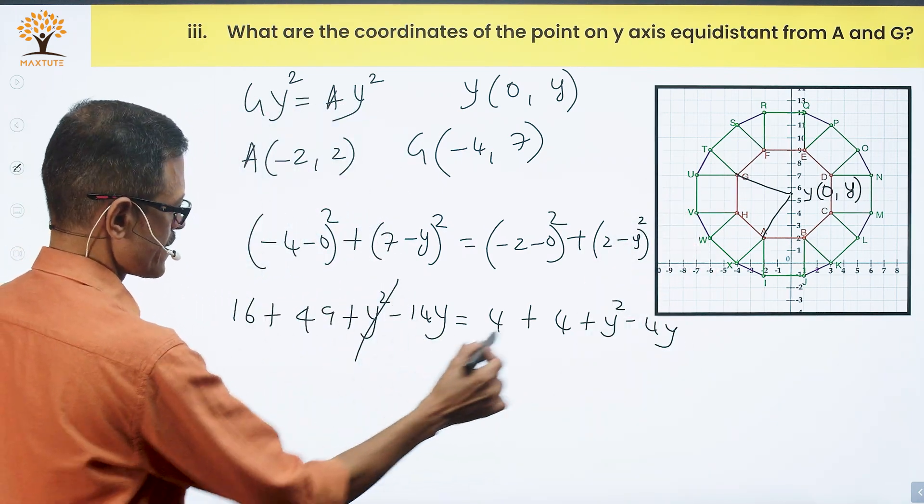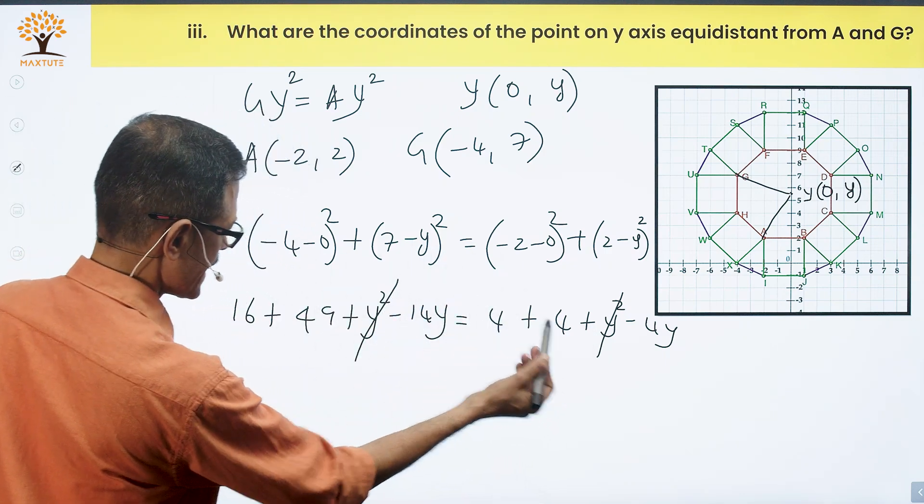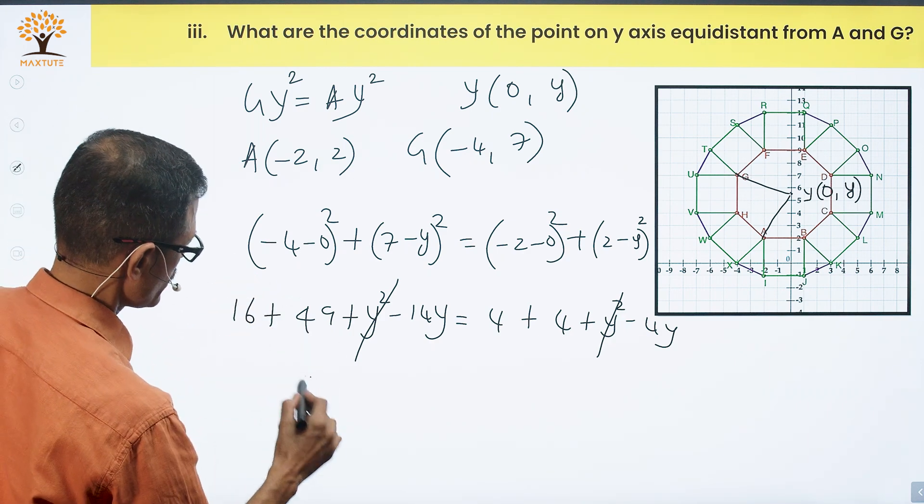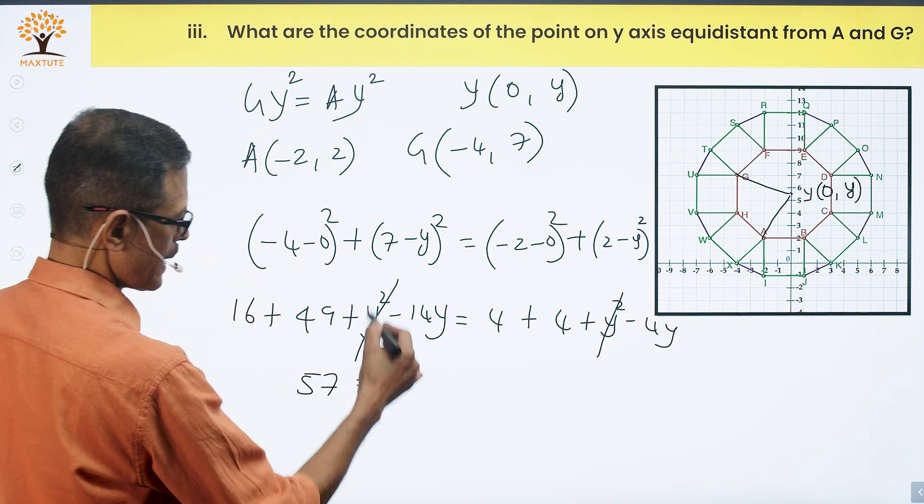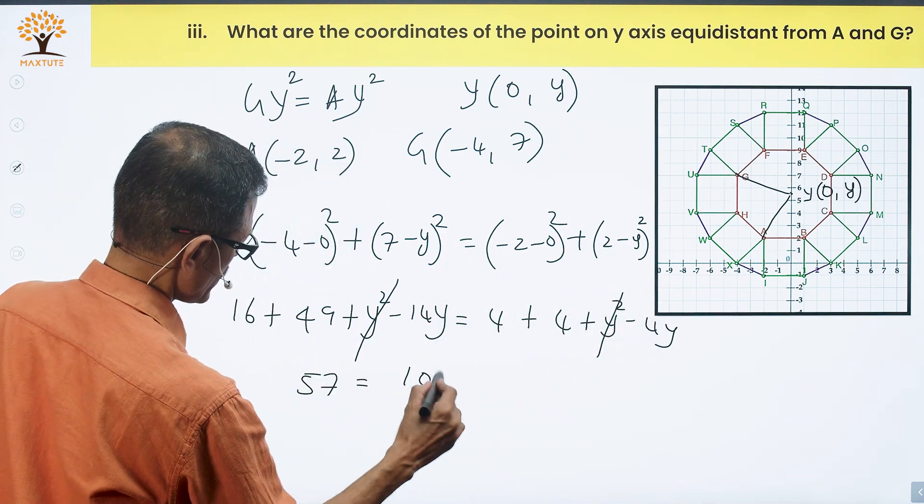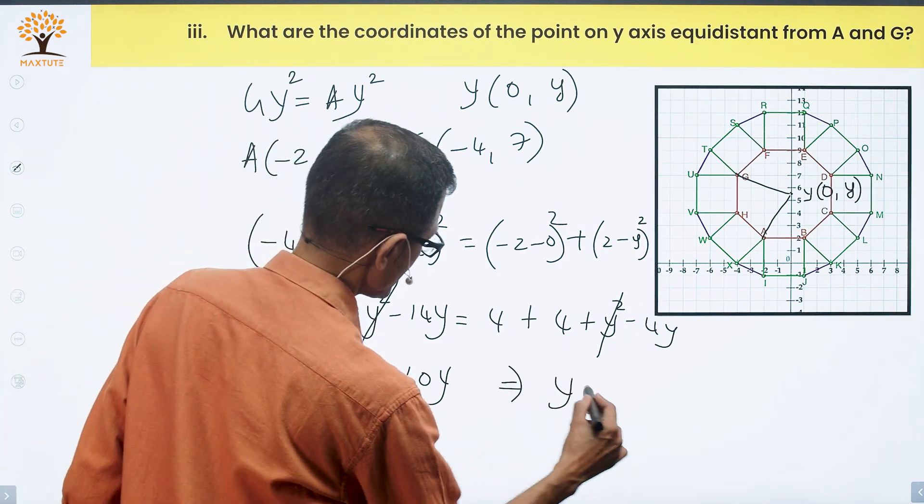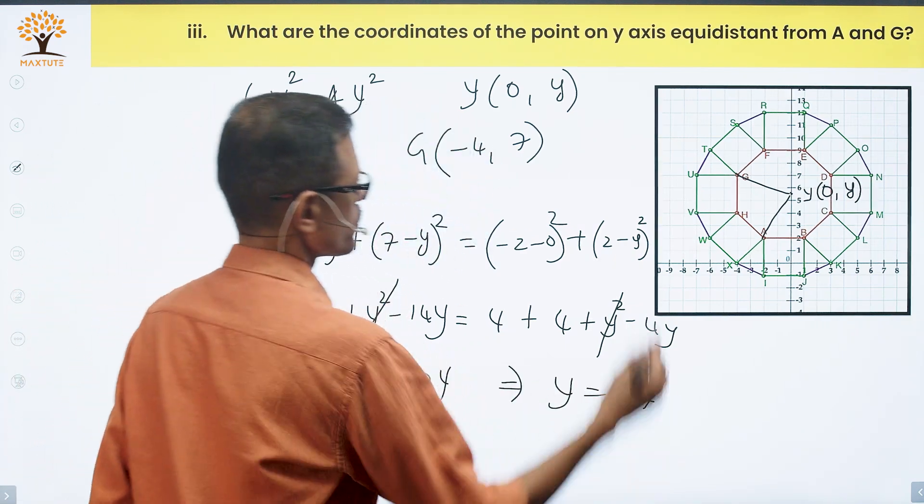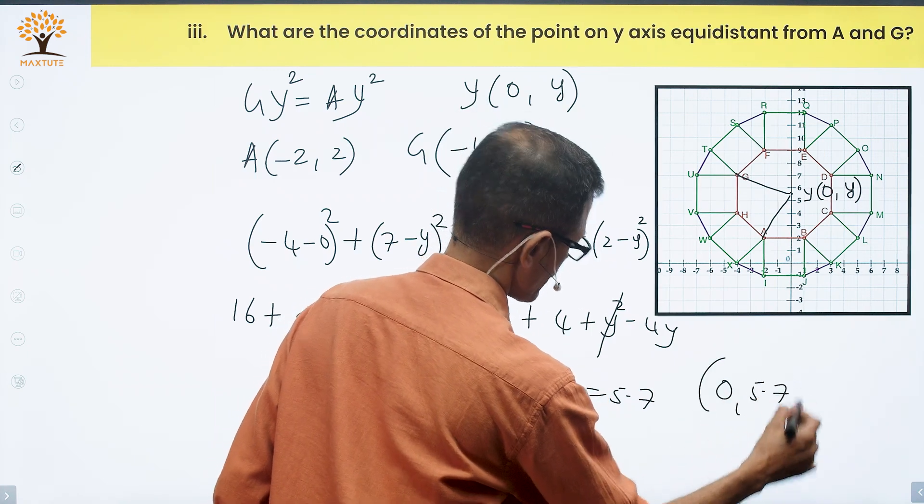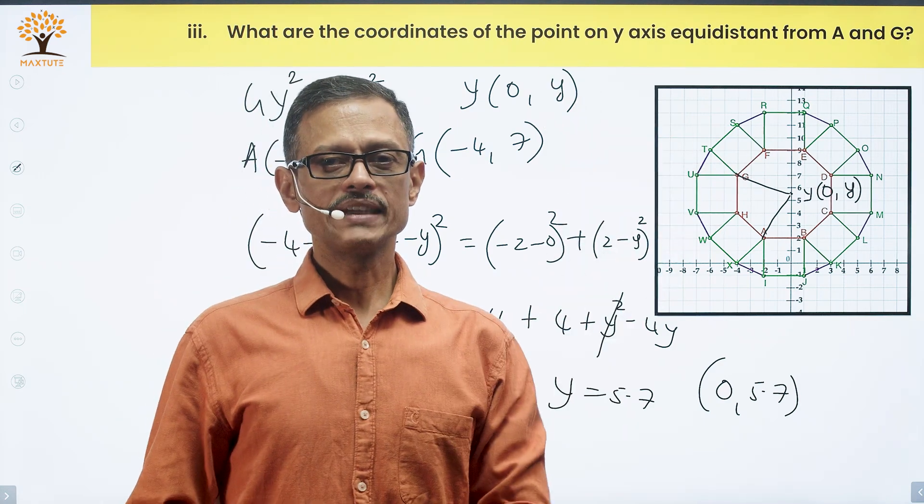Y square on both sides get cancelled. We have 8 here. 16 minus 8 is 8, 8 plus 49 equals 57. Minus 14Y goes to the right side, plus 14Y minus 4Y equals 10Y. 10Y equals 57, so Y equals 5.7. The coordinates of point Y are 0, 5.7. This is the point on the Y-axis equidistant from both A and G.